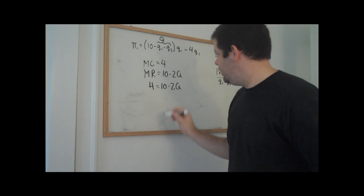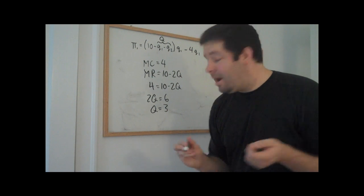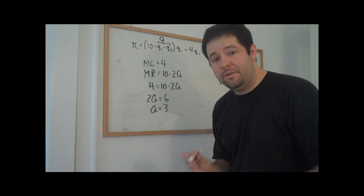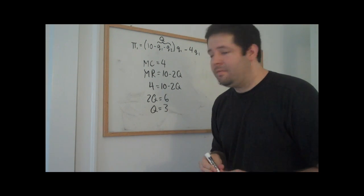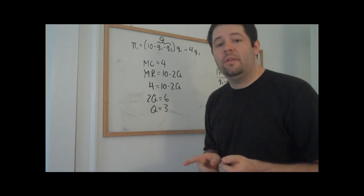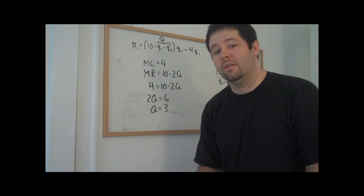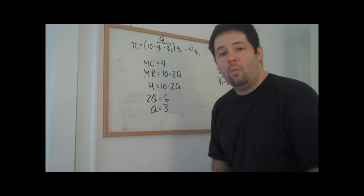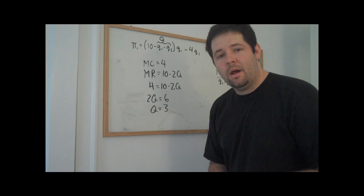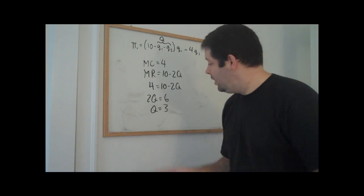Monopoly picks its quantity by setting marginal revenue equal to marginal cost. We can go ahead and solve this for Q. And what we'll see is that the monopoly will produce three units of output. And if these two firms got together and acted like a monopoly, what is called a cartel, then what each firm would produce is 1.5 units of output for a total of Q equal to three.